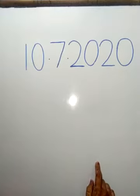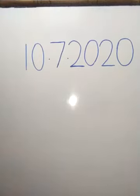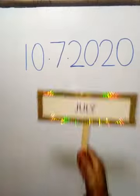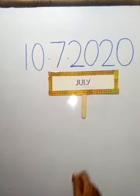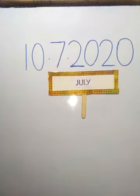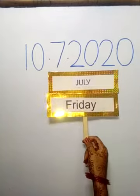Children, which month is going on? Very good. It is July month. Children, today which day is today? Today is Friday.